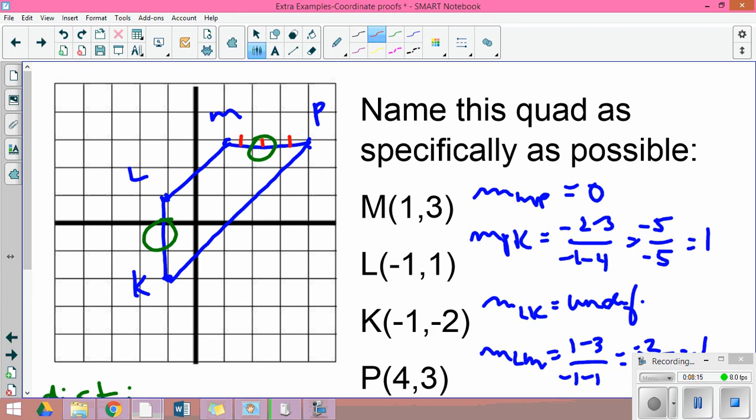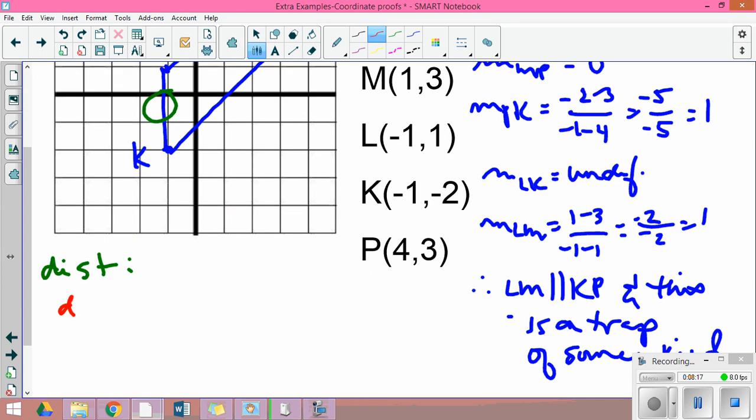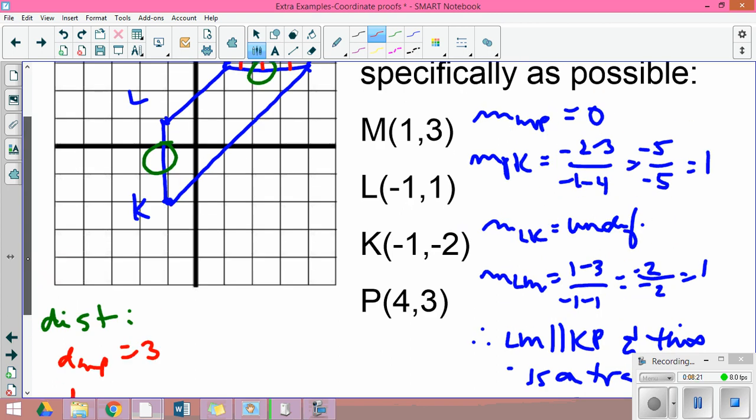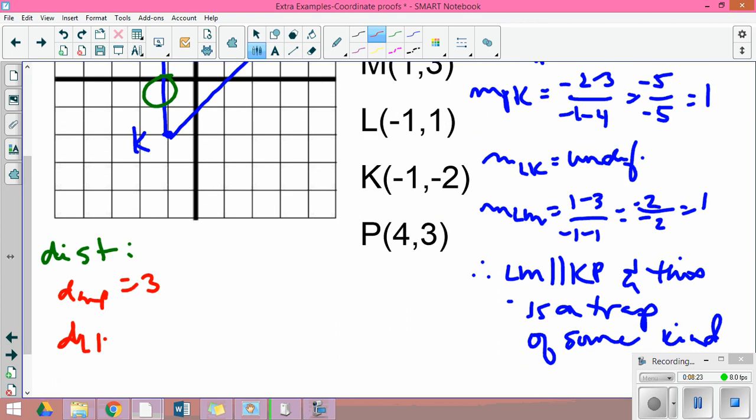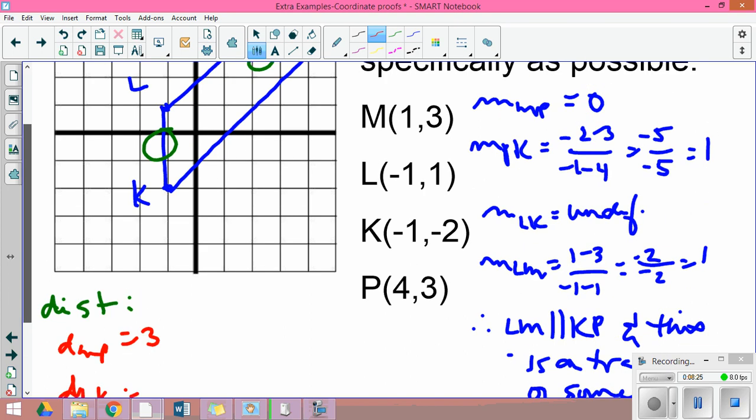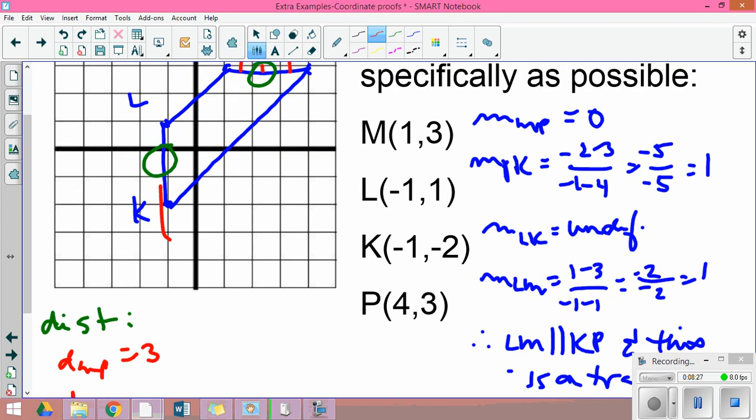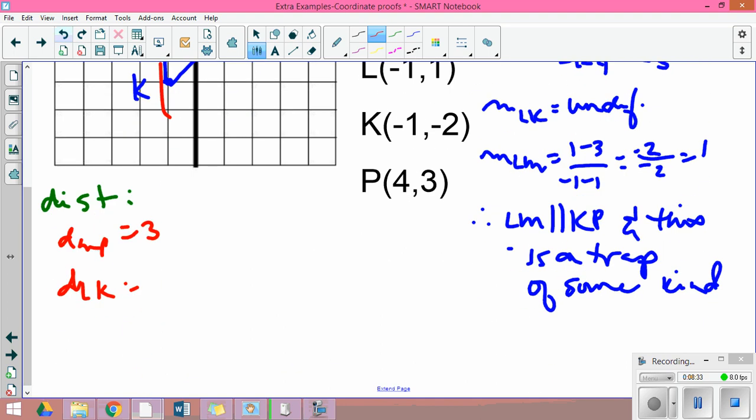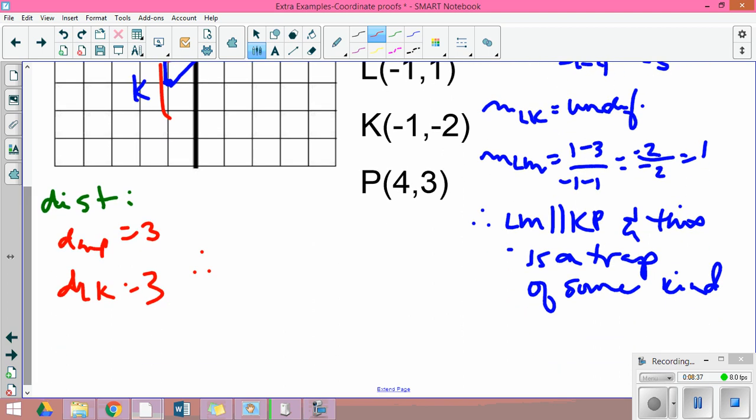M to P is one, two, three, so my distance of M to P equals 3. My distance from L to K is one, two, three.